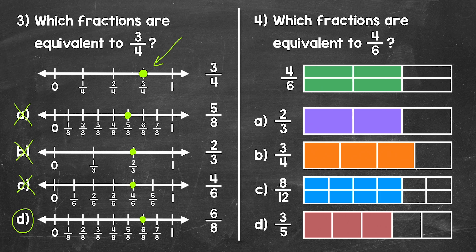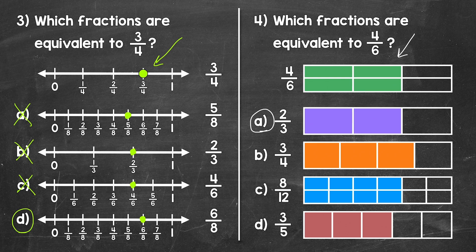Moving on to number 4, which fractions are equivalent to 4 sixths? We have a model to go off of right here — 4 sixths of that rectangle is shaded. Let's start with A, where we have 2 thirds. We actually just talked about these fractions in number 3. 2 thirds is equivalent, and we can see that with this model — the same amount, the same part of the whole rectangle is shaded in. We also saw that with the number lines in number 3.